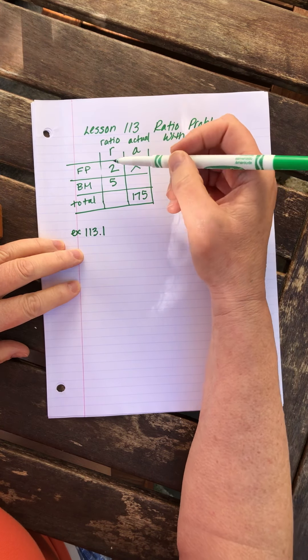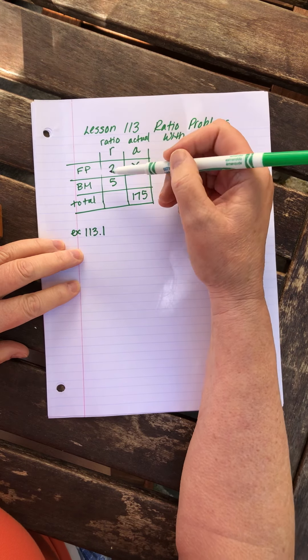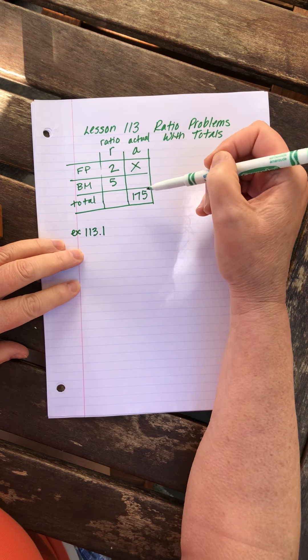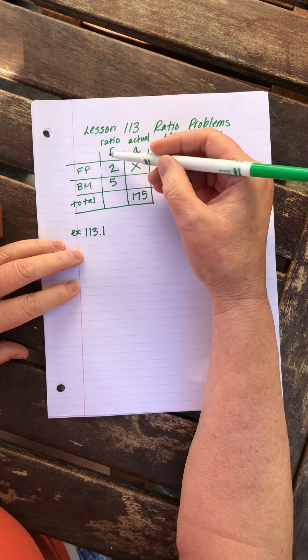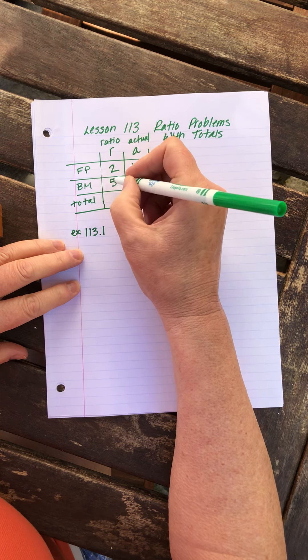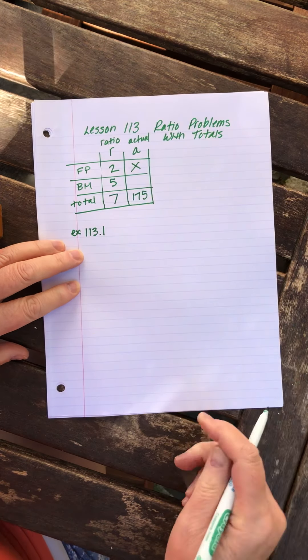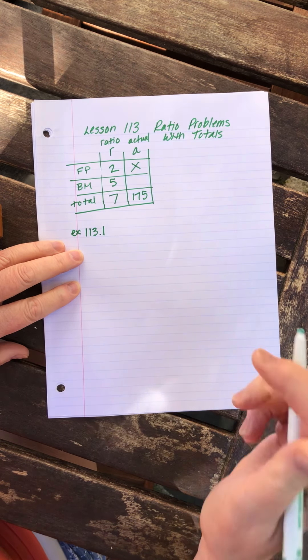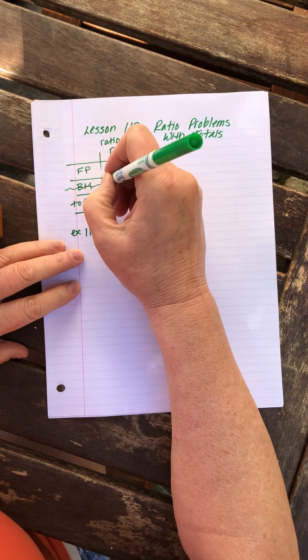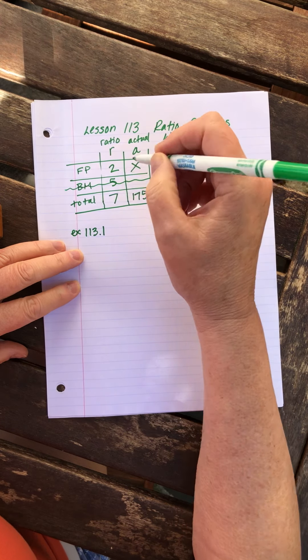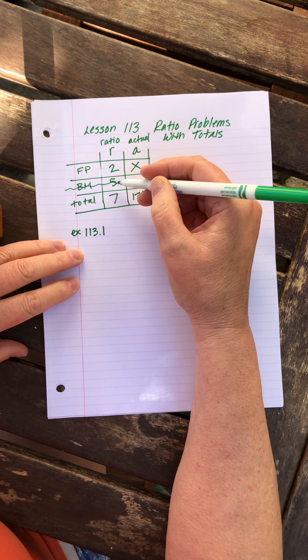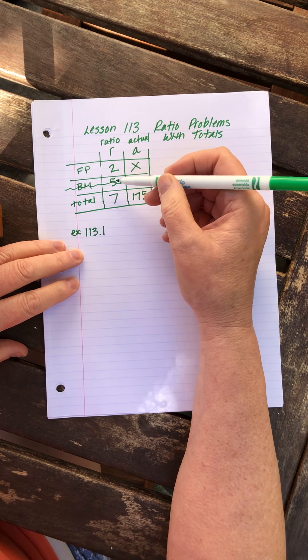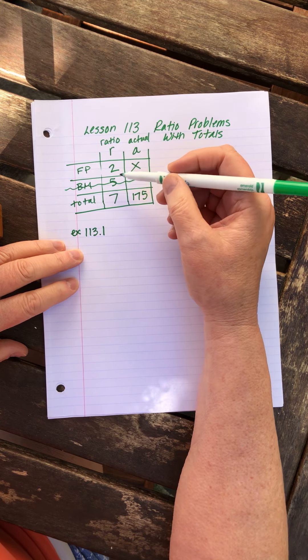We can see right away that we want to build a ratio with two of these three rows, but we need to fill in a blank first. The ratio total, we simply add those two together to get seven. Now we can see we don't really need this information about the band members. We can just kind of lightly cross that out. Don't erase it, don't scribble it out hard because you might decide wait, I did it wrong, I need that.